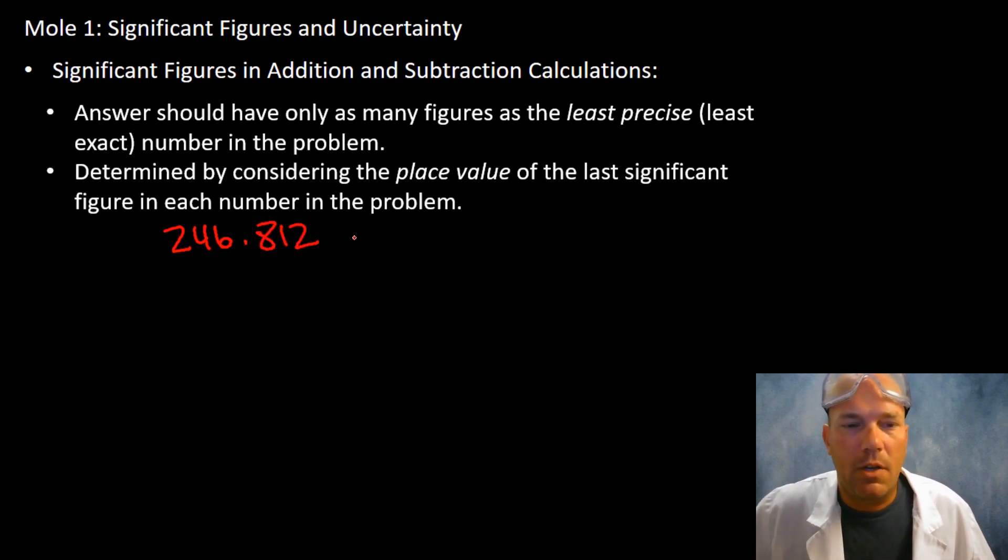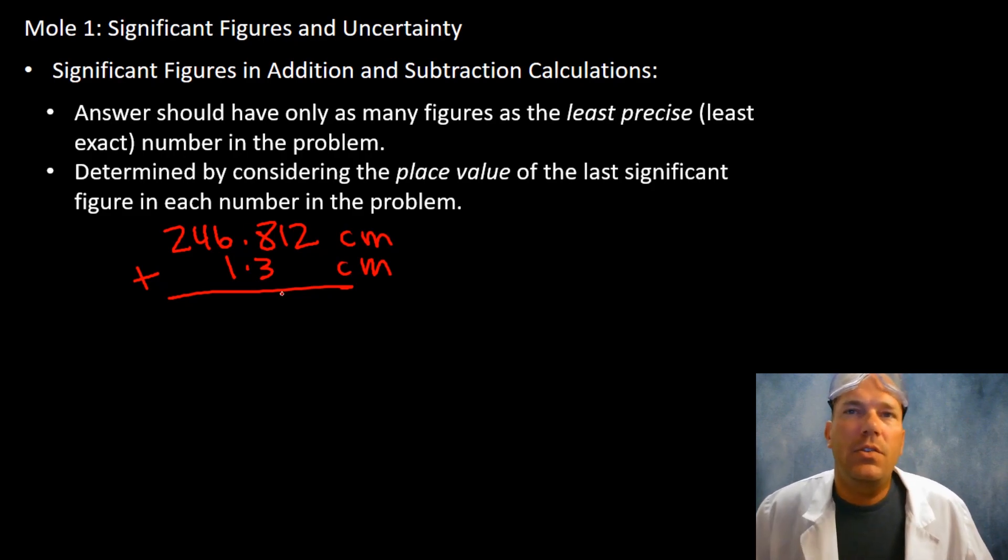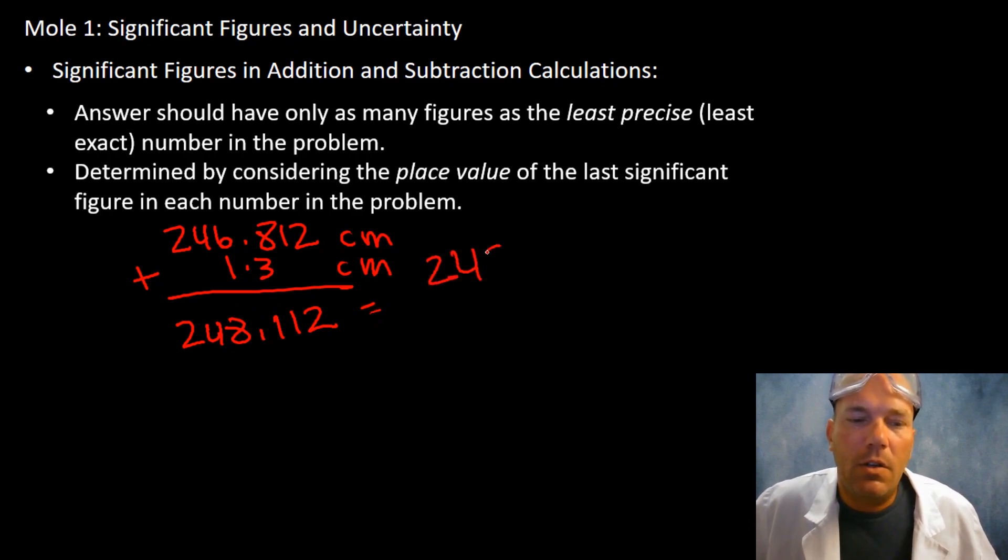Let's do this one: 246.812 centimeters and let's add to that 1.3 centimeters. Already you should be looking at this and saying okay, the place value of my least significant figure - that's going to be at a tenth of a centimeter. When you add this up you're going to get 248.112, but that is not the answer you would express. Paying attention to sig figs, the least precise is a tenth, so you would have to accurately write this as 248.1 centimeters.